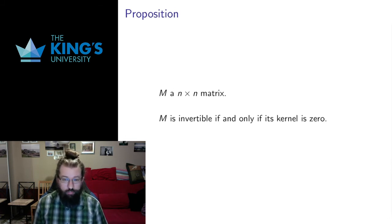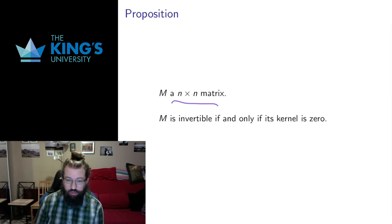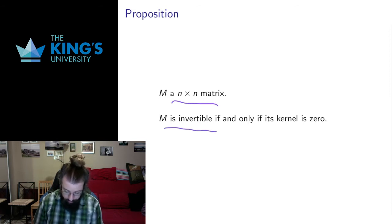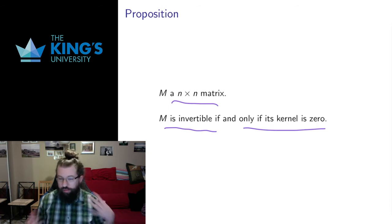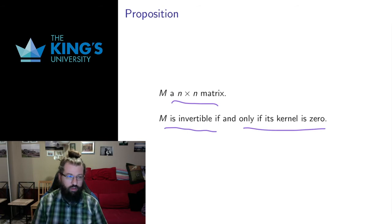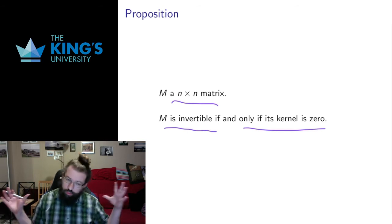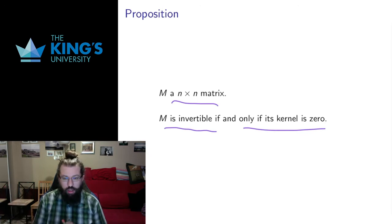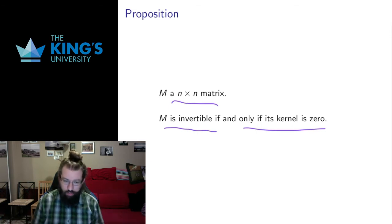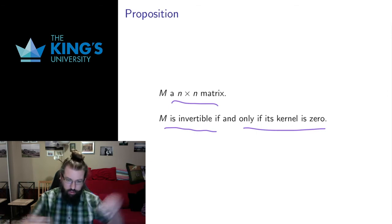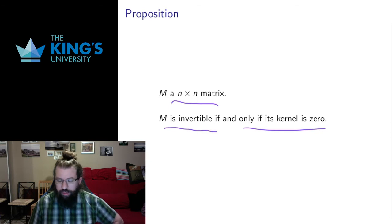The second thing I want to prove today: if I have an n by n matrix — invertibility is something we only consider for square matrices — this matrix is invertible if and only if its kernel is zero. This makes sense because the kernel is the space of things that are sent to zero. If we have a large kernel, we collapse many things down to zero, and that's not something we can undo. If we collapse a whole line or a whole plane down to zero, we can't pull zero back out to that whole line or plane — a function has to send each input to some individual output.